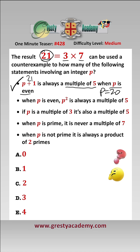For the second one, 21 isn't even and it also isn't a square number, so we can't use 21 equals 3 times 7 as a counterexample to that.